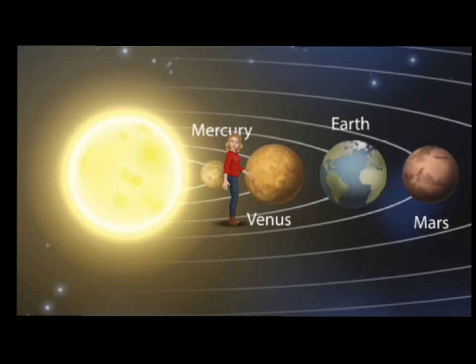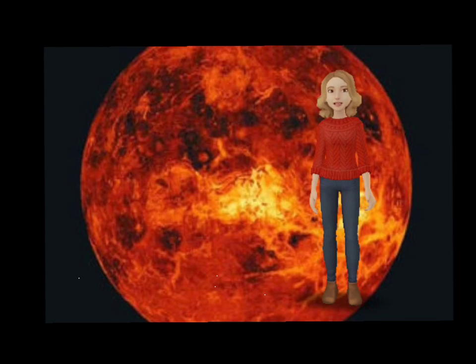Venus is the second planet from the Sun, about 67 million miles from the Sun. It is covered by clouds of water vapor and sulfuric acid, so the surface cannot be seen with an ordinary astronomy telescope. It is the brightest planet in our solar system.